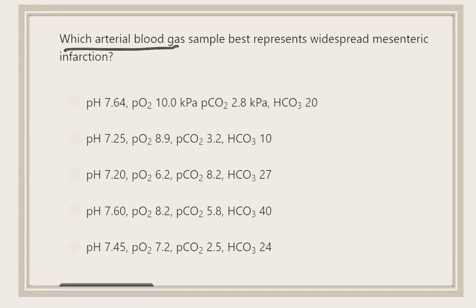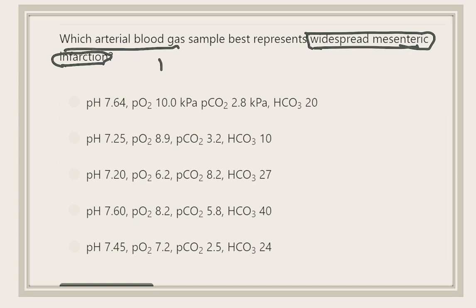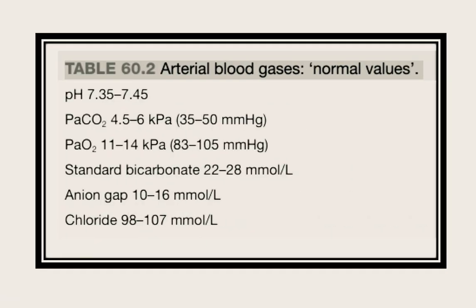Which arterial blood gas sample best represents widespread mesenteric infarction? Mesenteric infarction means loss of blood supply to the mesentery of the intestine, causing widespread infarction. In mesenteric infarction, there will be development of metabolic acidosis. So we have to find the option that represents metabolic acidosis. Let's first look at the important parameters for solving an ABG report.